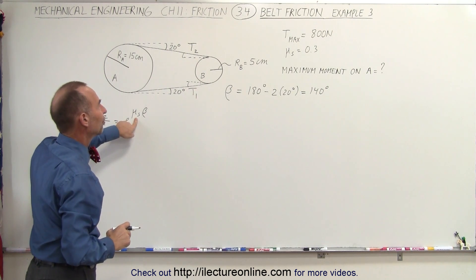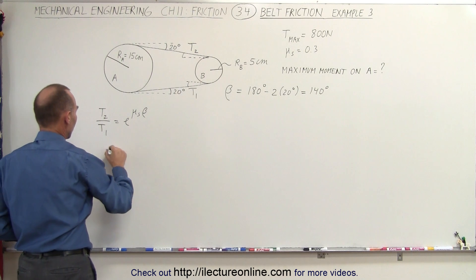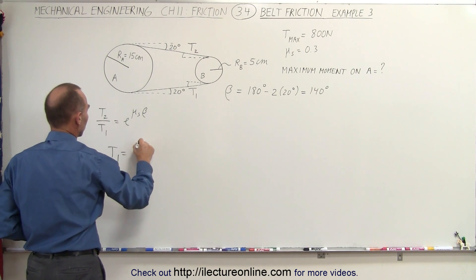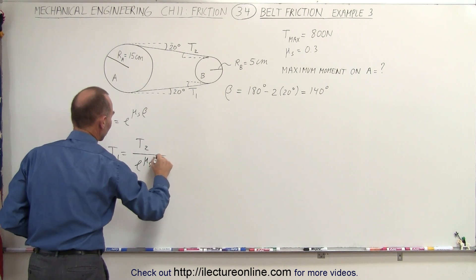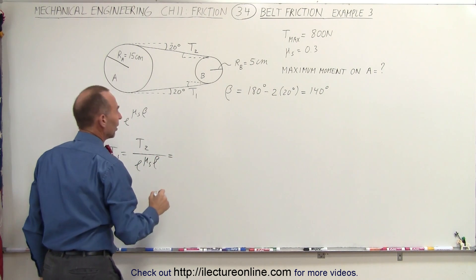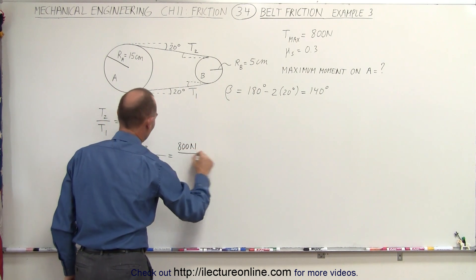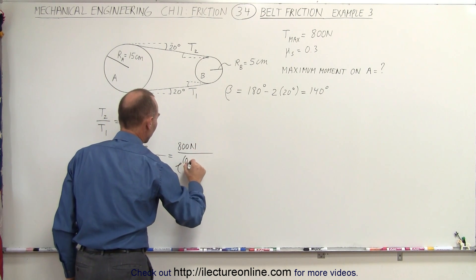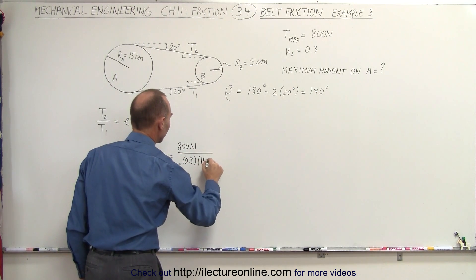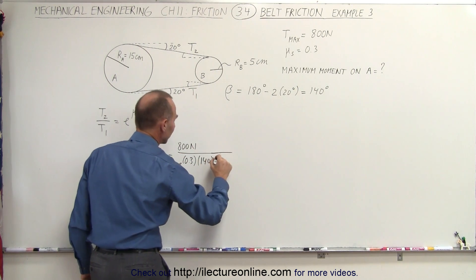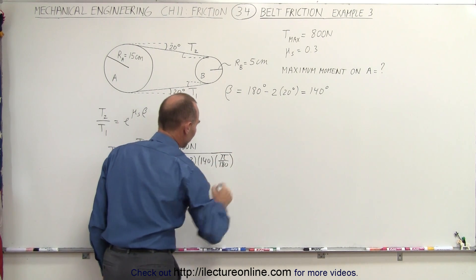We're given the coefficient of static friction and we're trying to find T1. That means that T1 is equal to T2 divided by E to the mu sub s times beta. So in this case, we have a maximum tension of 800 newtons divided by E to the 0.3 and beta will be 140 degrees, but we'll have to convert that to radians, which is pi divided by 180 as the conversion factor.